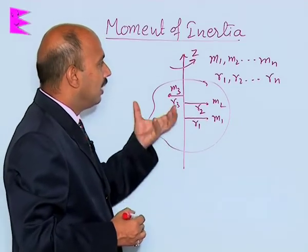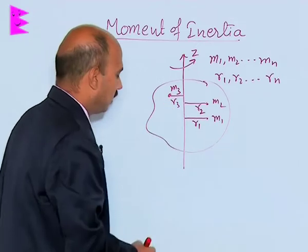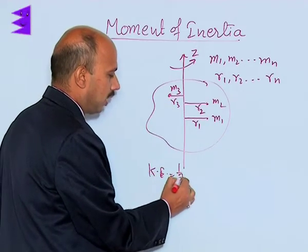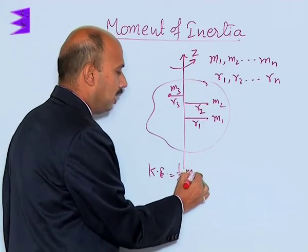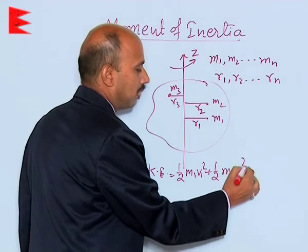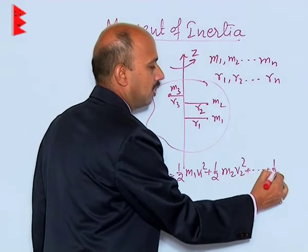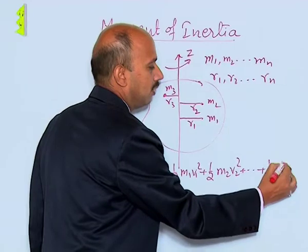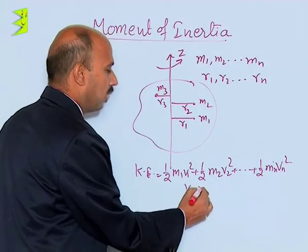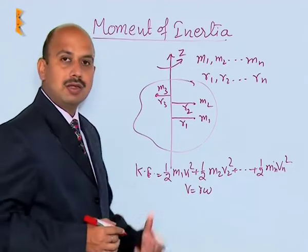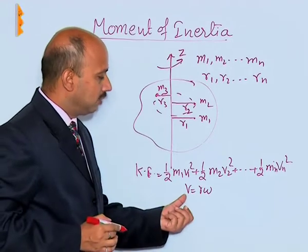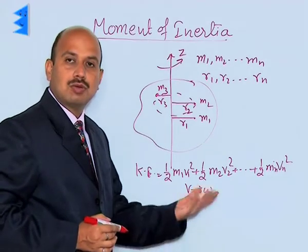Then we can write the kinetic energy of this body. That can be written as: kinetic energy equals half m1 v1 squared plus half m2 v2 squared, plus up to half mn vn squared. We know v equals r·omega, so every particle has a linear velocity moving in a circular path, and their linear velocities are given by v equals r·omega.